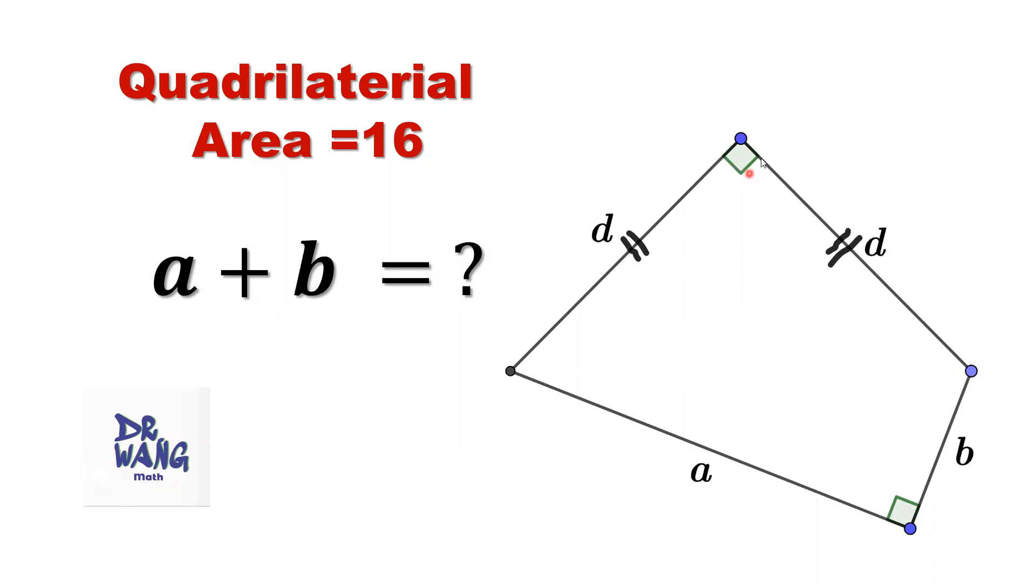This angle is 90 degrees. This angle is 90 degrees. This side and this side are equal. The question is, what is the value of the sum a plus b?